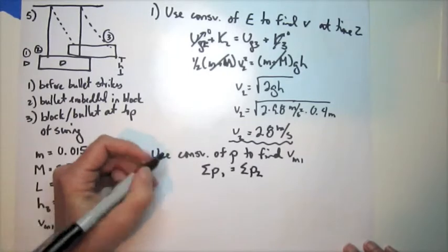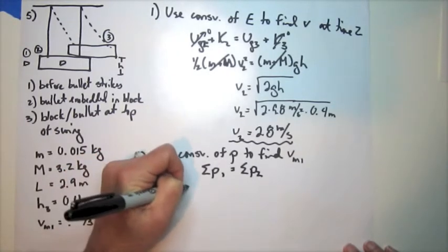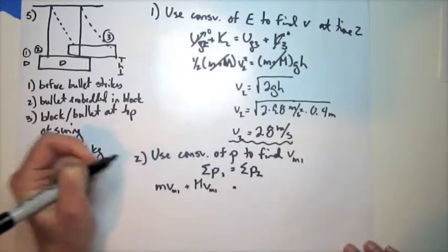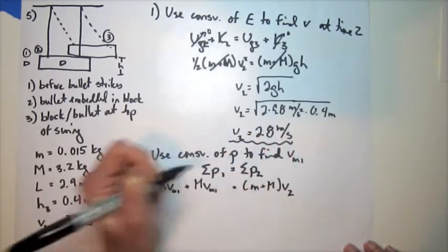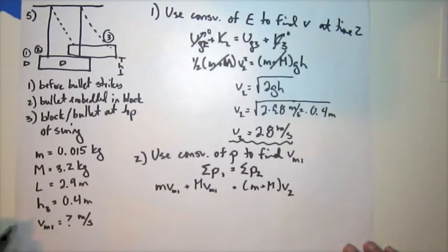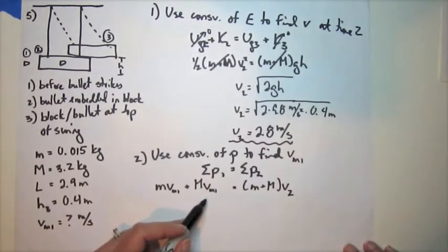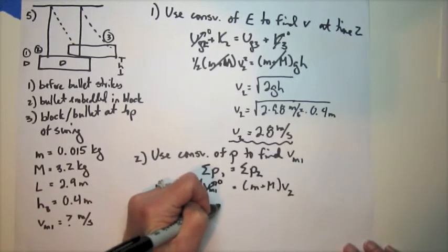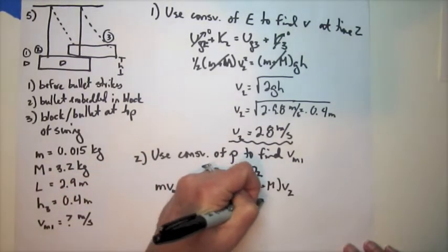So, m vm1 plus big M vm1 equals. And then they combine. They have a shared common velocity after the collision. So we know everything on this side of the equation. We know the initial velocity of the block is 0. And so we're left with the initial velocity of the bullet, which is what we're looking for. m dm1 equals m plus M.